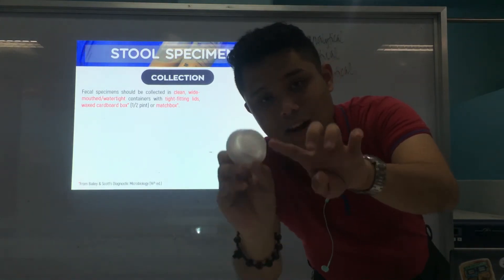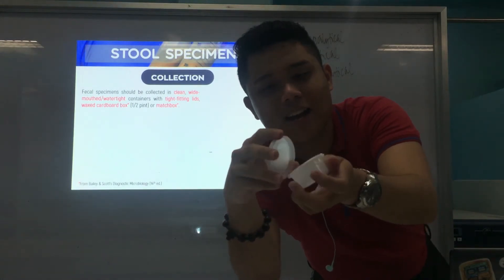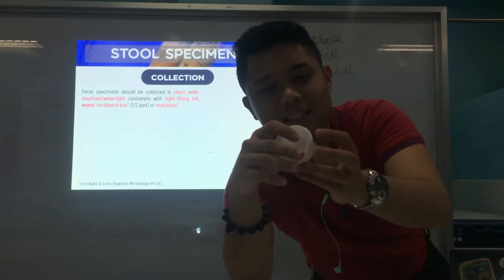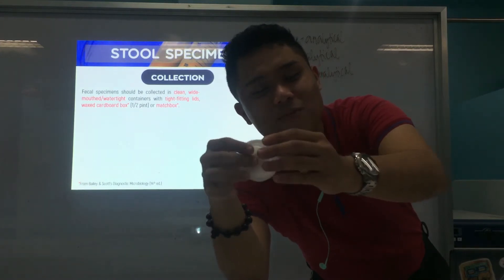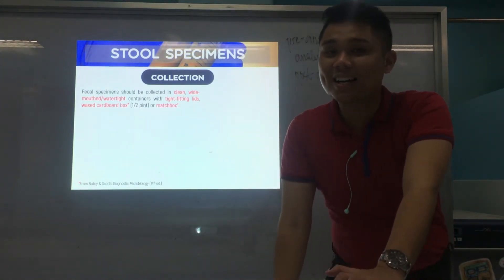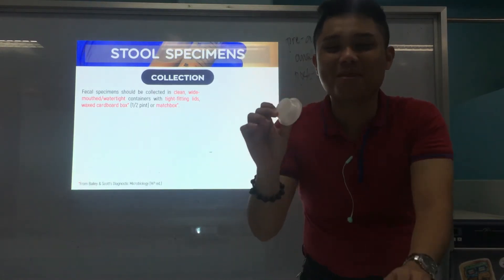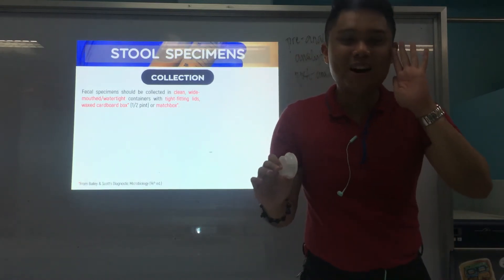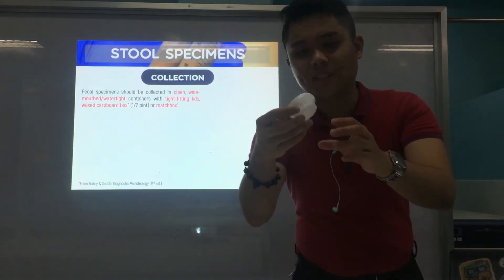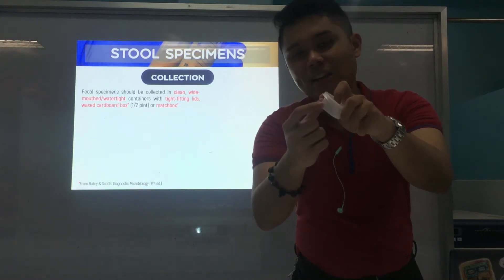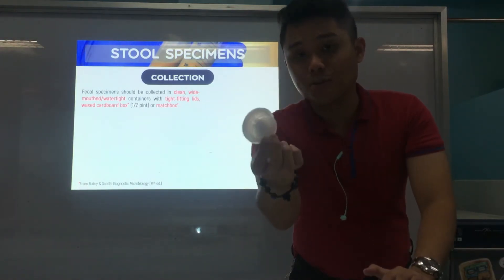As you can see, the container is flat on the bottom and has a wide mouth. This is the cover — it should be tight-fitting. You need to label here the patient's name, date of birth, and date and time of collection. This is what we use in class, but it's not the only type of container available.